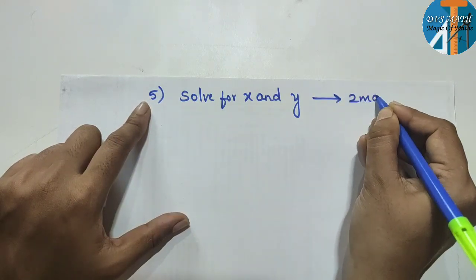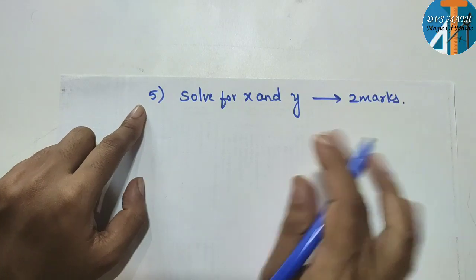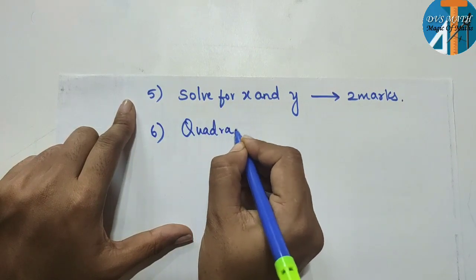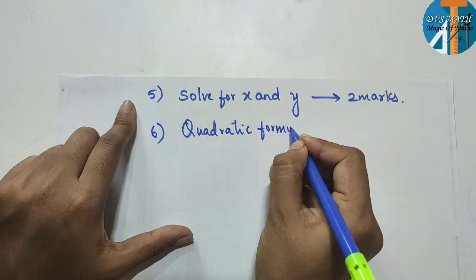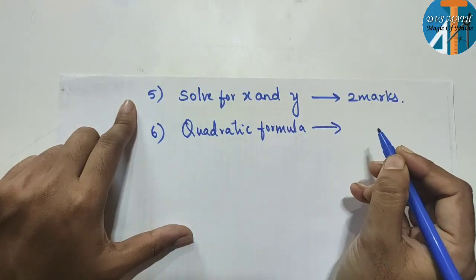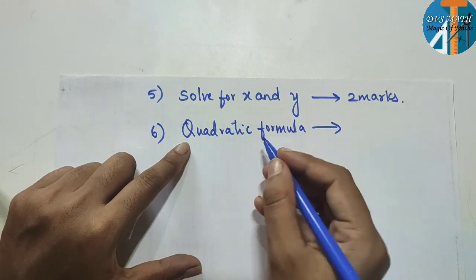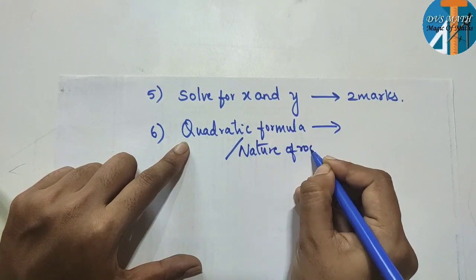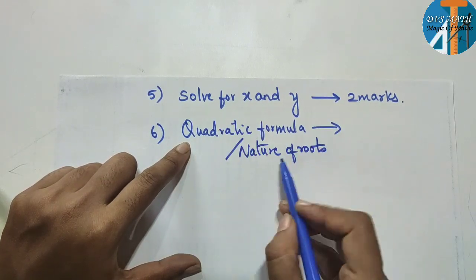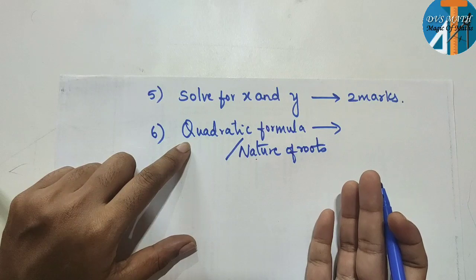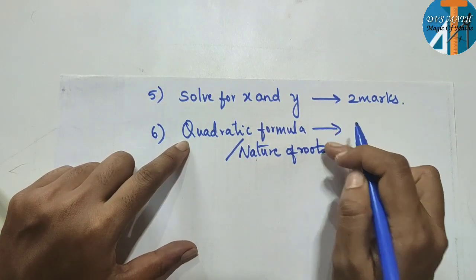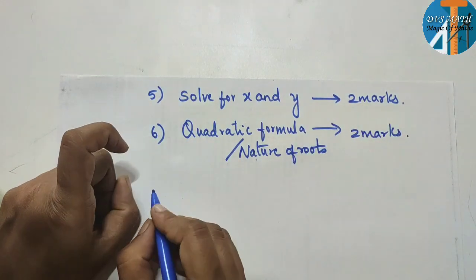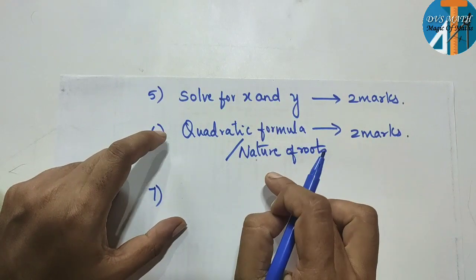Solve for x and y — that gives two marks. Two marks, easy to get. Next, quadratic formula. Quadratic formula — related to this, either nature of roots or quadratic formula. Last time, nature of roots — this time use quadratic formula to solve. So here you can easily get two marks.